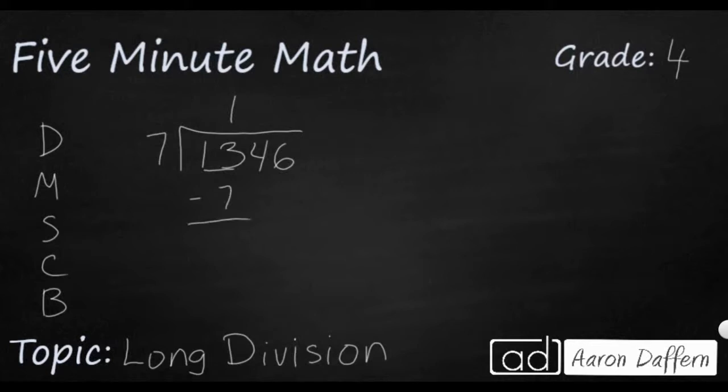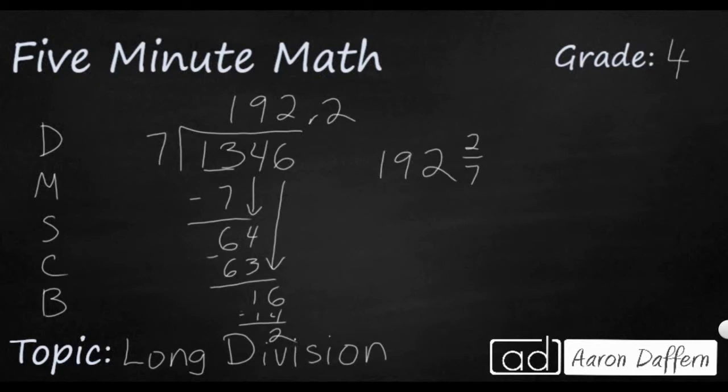So now we're going to subtract. That's going to be six. Just going to bring the four down. We're going to reevaluate. Seven goes into 64 nine times. That's going to be 63. So we're going to subtract here. I'm going to bring this down, and that's going to be 16. So seven goes into 16 twice, and that's going to be 14. So now we have a remainder of two. Or you can write it as a mixed number, where your numerator is your remainder, and your denominator is your divisor.